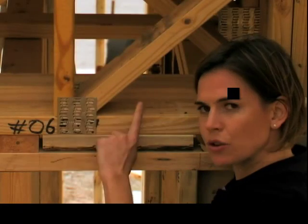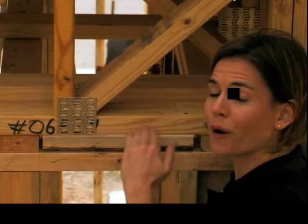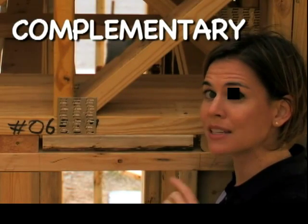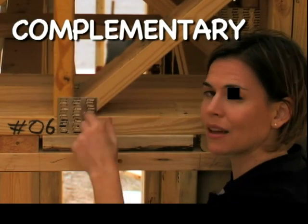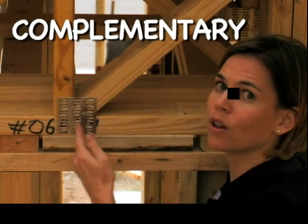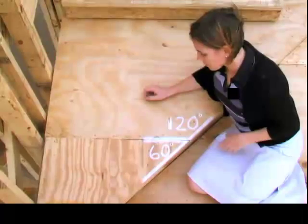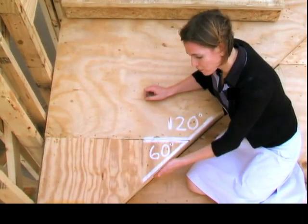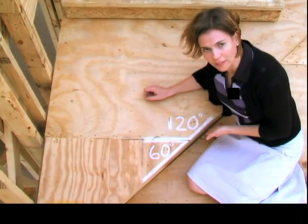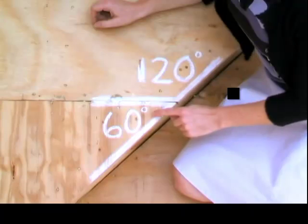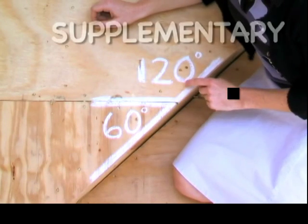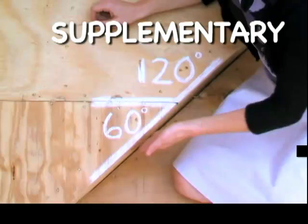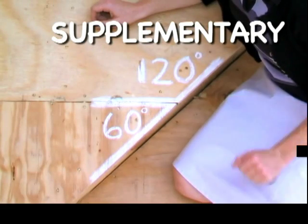These two angles together form a right angle. We call them complementary because when you add them, they equal 90 degrees. This step is a great example of two angles that form a straight line. These two angles are called supplementary because together they add up to 180 degrees.